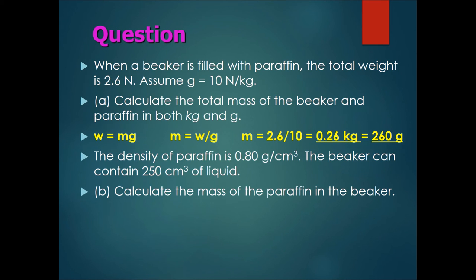Okay, now let's go to the answer. Density equals mass divided by volume. Rearranging the formula, we have mass equals density times volume. M equals density of 0.8 times 250 cm³ of volume. Therefore, the mass of paraffin in the beaker is 200 grams.